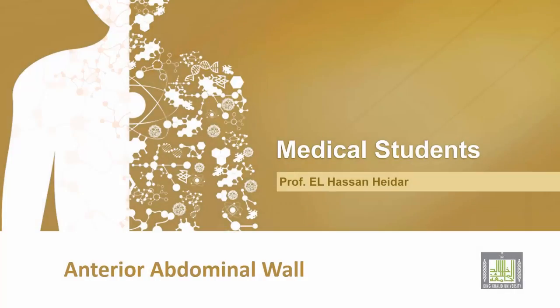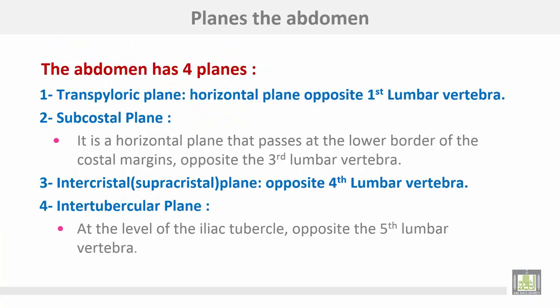Starting with the anterior abdominal wall, the abdomen has four planes. Number one: the transpyloric plane, a horizontal plane opposite the first lumbar vertebra. Number two: the subcostal plane, a horizontal plane that passes at the lower border of the costal margins opposite the third lumbar vertebra. Number three: the intercrystal or supracrystal plane, opposite the fourth lumbar vertebra. Number four: the intertubercular plane, at the level of the iliac tubercles, opposite the fifth lumbar vertebra.